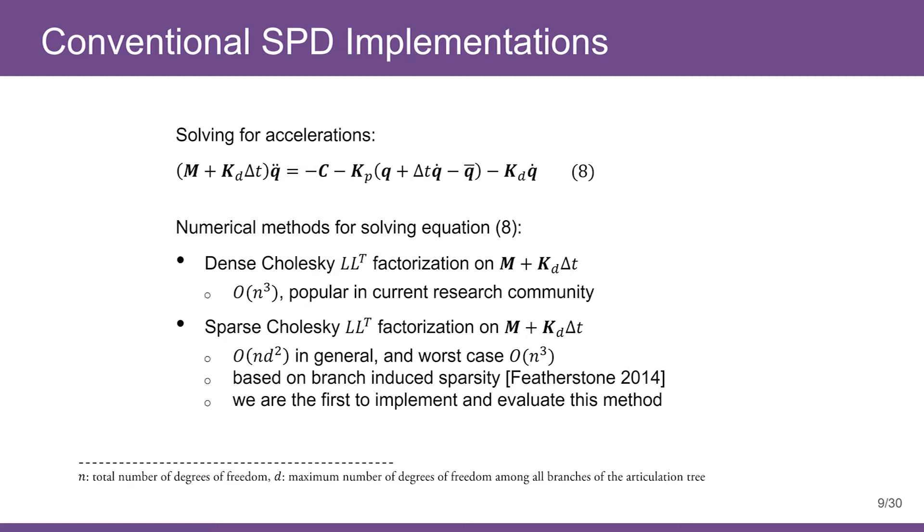Another approach is to exploit branch-induced sparsity and apply a sparse matrix factorization. This approach has a better running time depending on the depth of the kinematic tree. Specifically, this method takes n*d² time where d is the maximum number of degrees of freedom among all branches of the articulation tree. It's still cubic time when the tree becomes a chain.